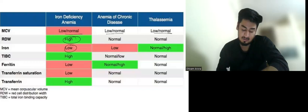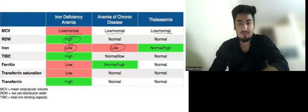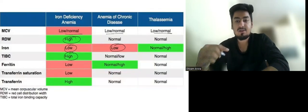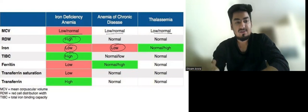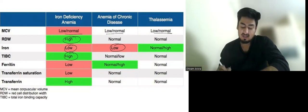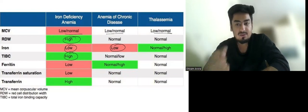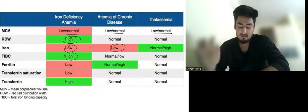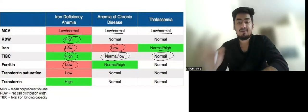Iron is low in iron deficiency anemia and anemia of chronic disease, while in thalassemia it is normal or can be high due to repeated blood transfusions. TIBC is high in iron deficiency anemia because the body compensates by increasing transferrin. In anemia of chronic disease, iron stores exist but are not utilized, so transferrin does not increase — meaning TIBC is normal or low. In thalassemia, TIBC is normal.